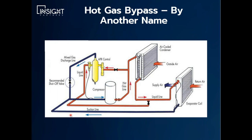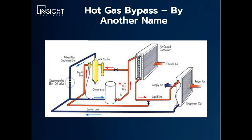Another version of hot gas bypass is called a raw wall device or an APR control valve. The same premise — you have a bulb strapped to the suction side of your compressor, and when that starts to get too cold into a freezing condition, some hot gas is allowed to be blended with some liquid to make mixed gas, which is then also blended with your low pressure, low temperature suction gas to artificially raise your suction line. The difference is that in this system you're actually bypassing liquid, so you're not feeding all of your liquid to your evaporator — effectively reducing the capacity of your evaporator by bypassing both hot gas and liquid.